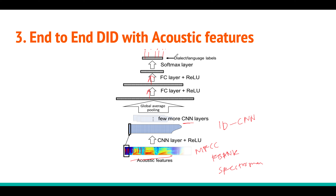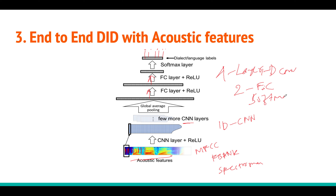The same architecture can be applied to speaker identification, language identification, or accent identification. This is the whole end-to-end acoustic feature-based dialect identification model: 4 layers of 1D convolutions, 2 fully connected layers, and a softmax that classifies the utterance into one of 5 dialect labels.